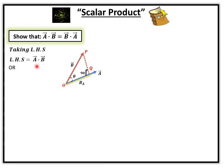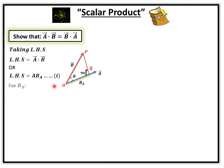Now, for the left hand side, we can write: left hand side is equal to the magnitude of vector A multiplied by the component of vector B along the direction of vector A, which we call B subscript A. This is our equation number 1. We will find the value of B subscript A from this triangle.